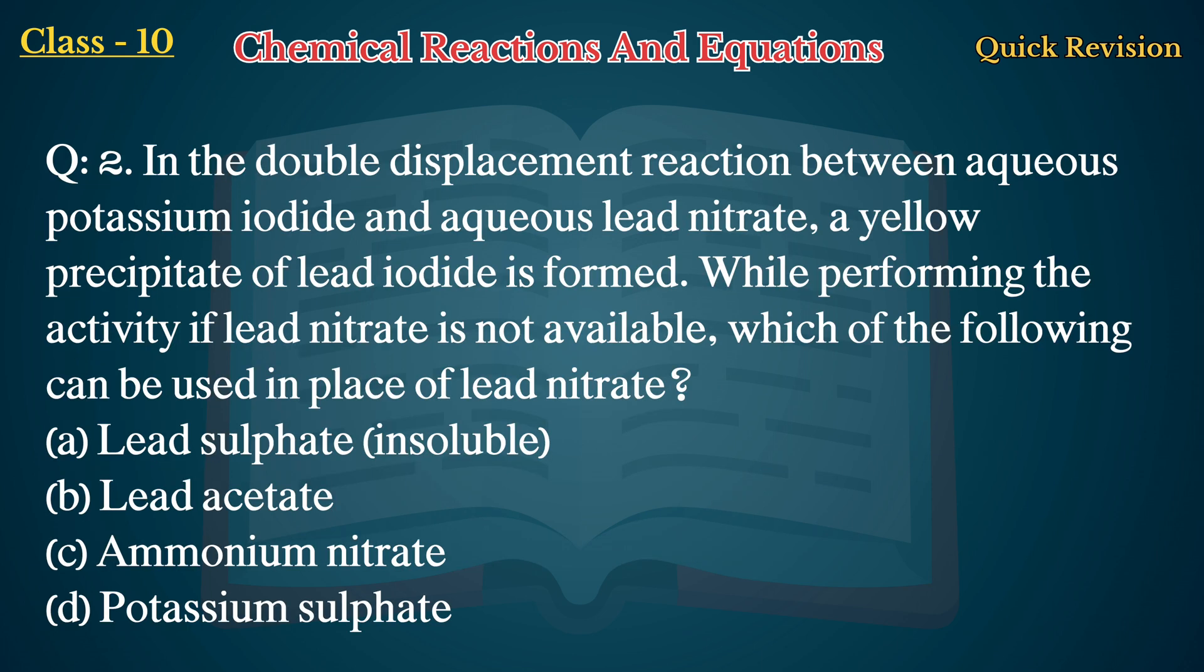Question No. 2: In the double displacement reaction between aqueous potassium iodide and aqueous lead nitrate, a yellow precipitate of lead iodide is formed. While performing the activity, if lead nitrate is not available, which of the following can be used in place of lead nitrate? A. Lead sulfate (insoluble), B. Lead acetate, C. Ammonium nitrate, D. Potassium sulfate. Answer: B. Lead acetate.